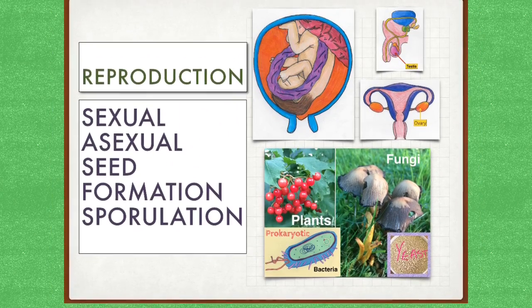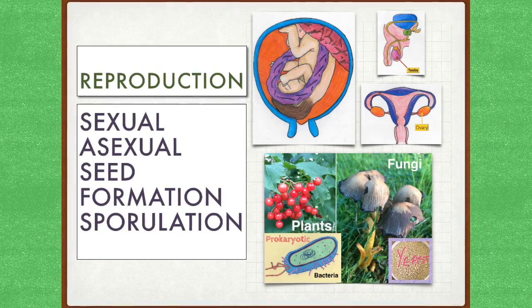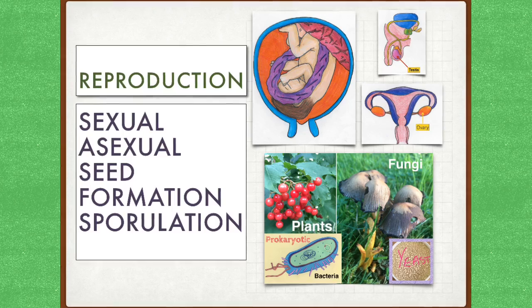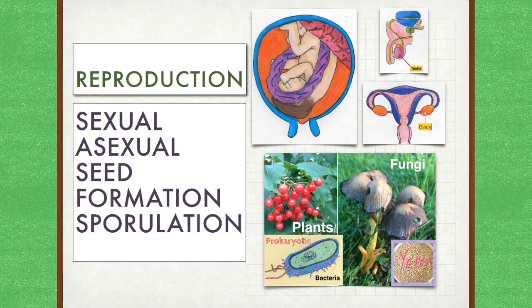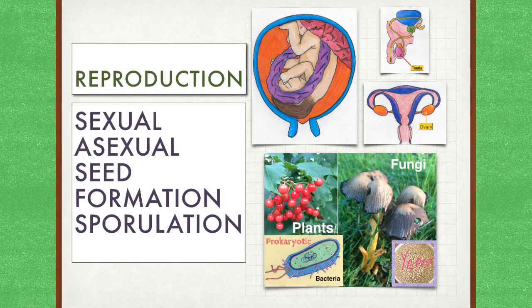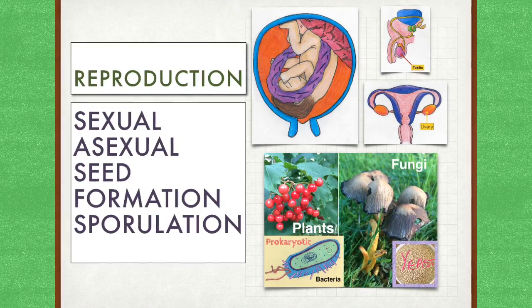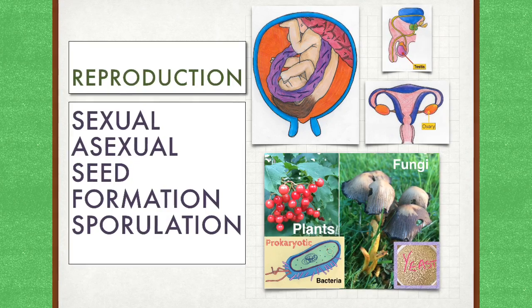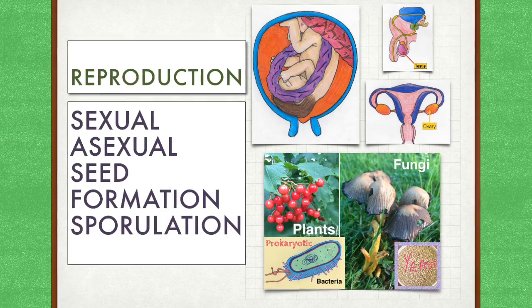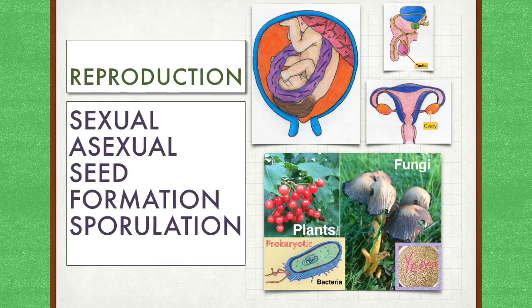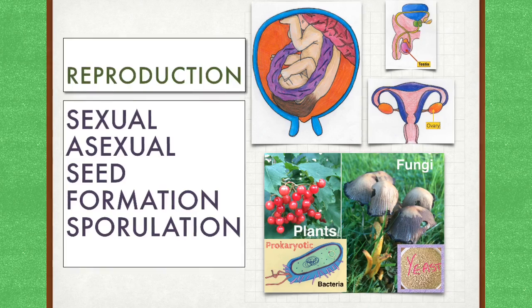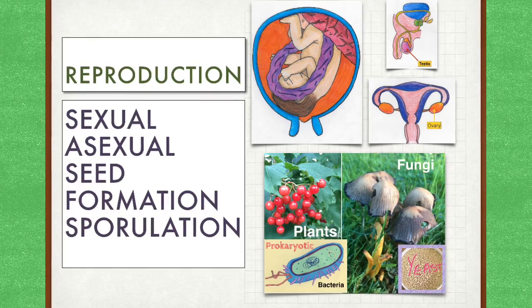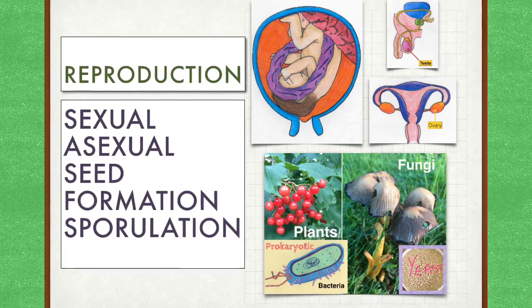Then we have reproduction. All living things must be able to reproduce, or else they would simply die off. Animals reproduce by means of sexual reproduction using two parents. Plants reproduce asexually and sexually — asexual means one parent only. Some fungi can produce spores, and bacteria reproduce asexually.